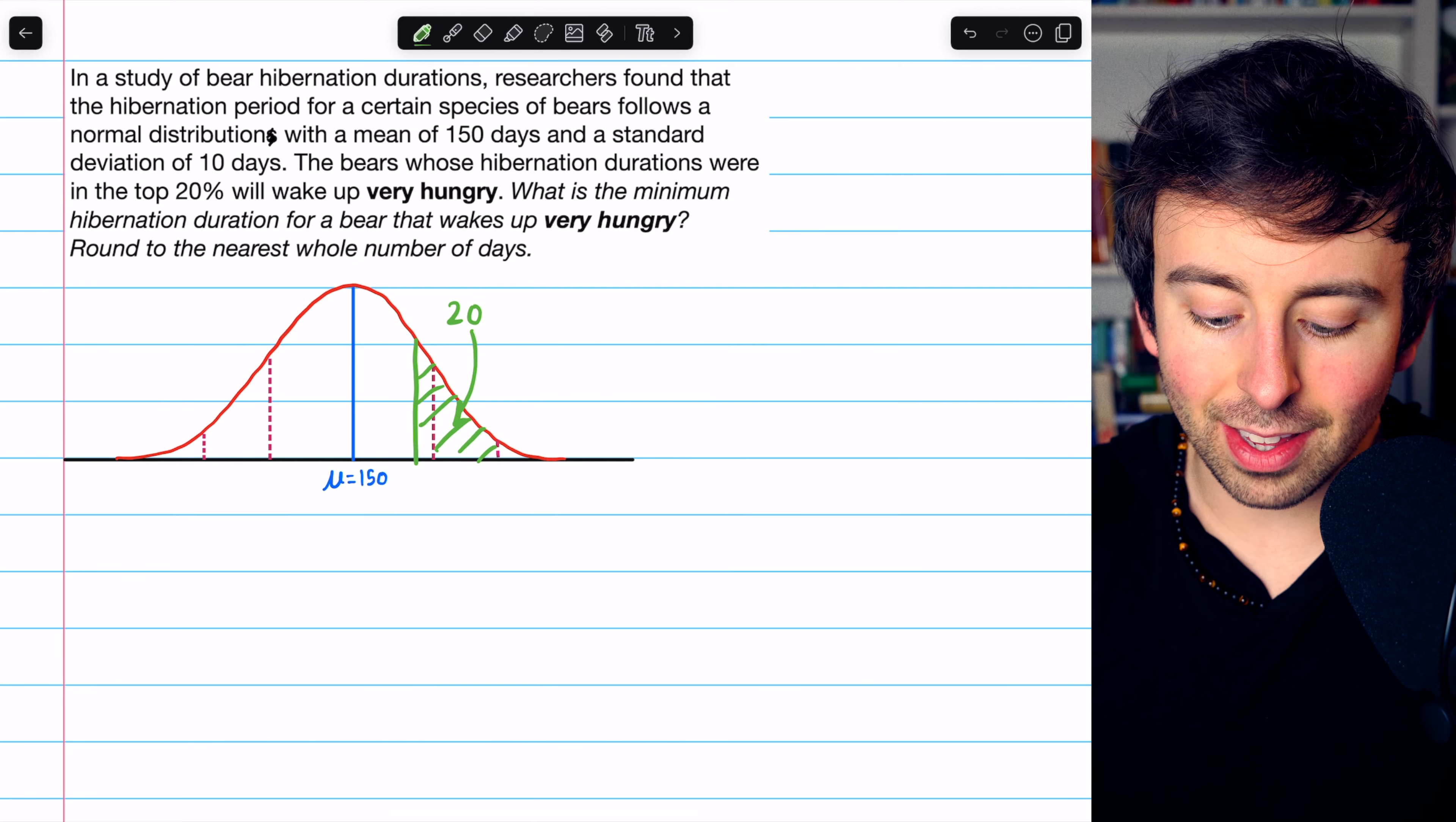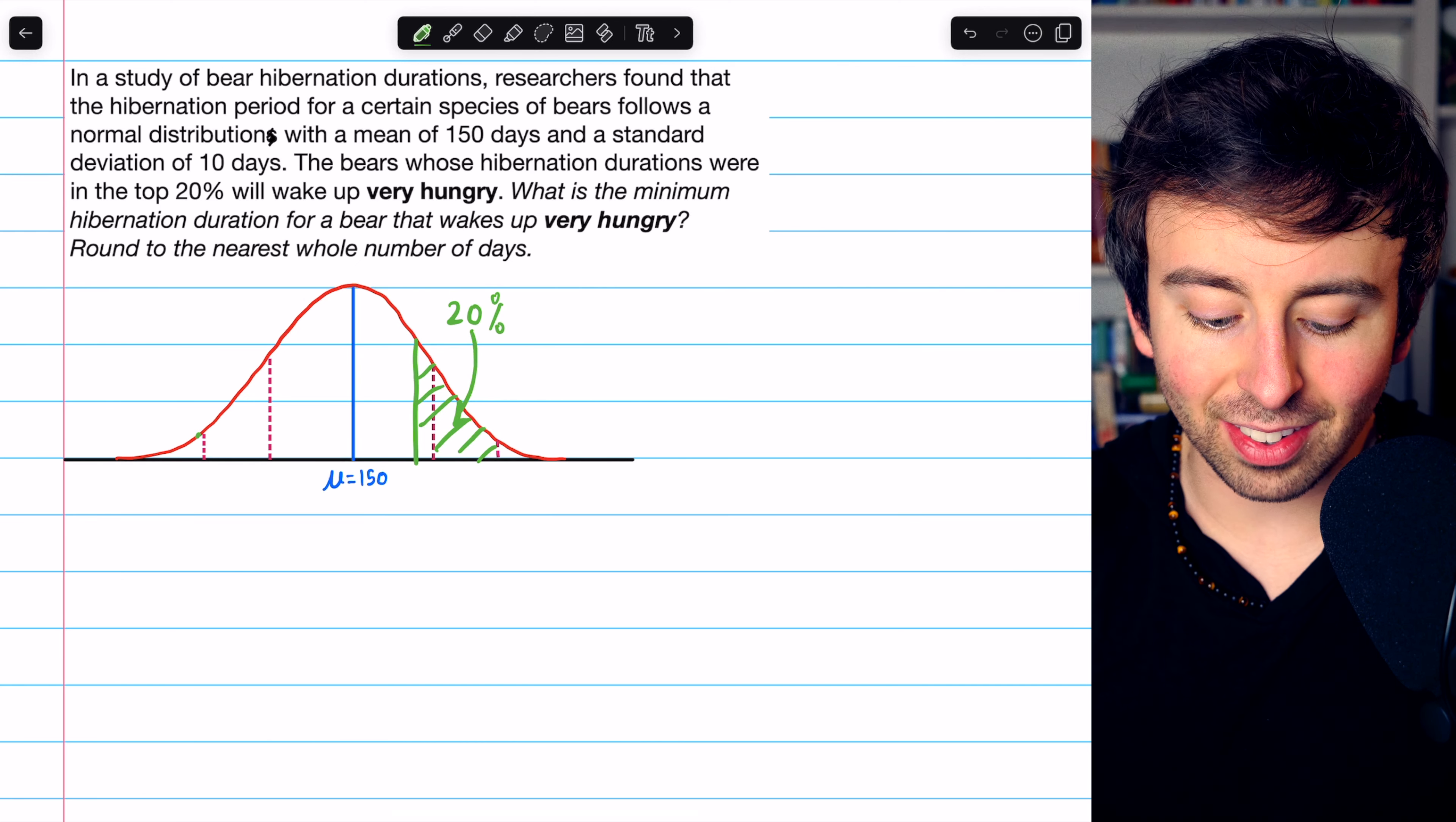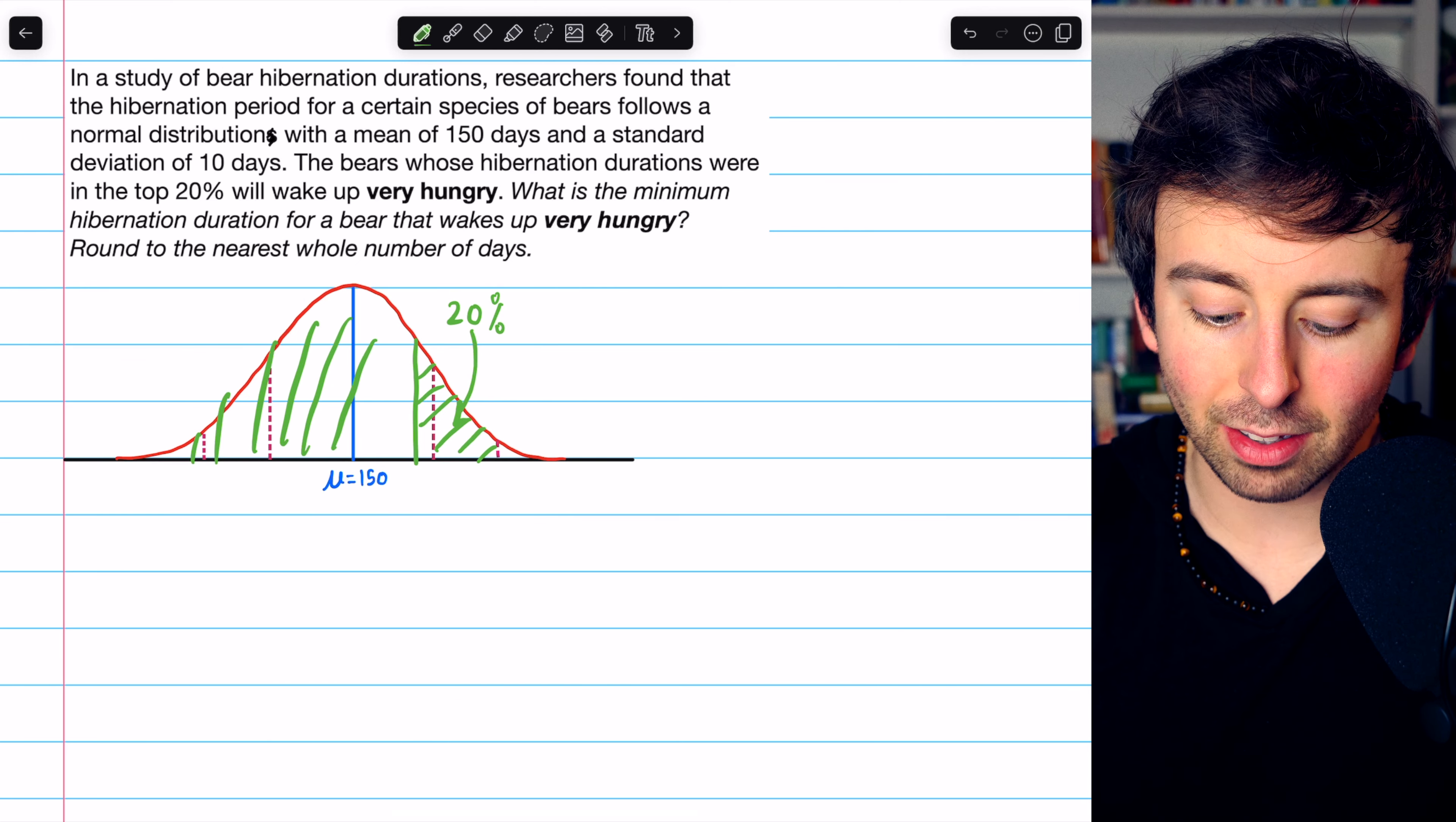Now remember that the z-score table is going to give us left tail probabilities over here. So if we're looking for the z-score corresponding to this position, we need the z-score that has a left tail probability of 80%.